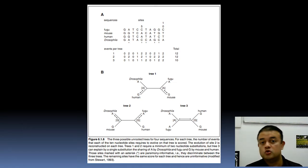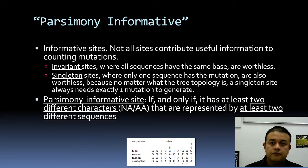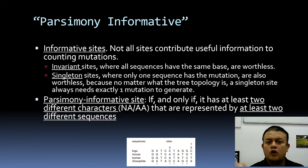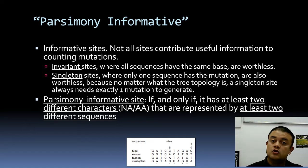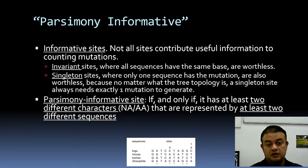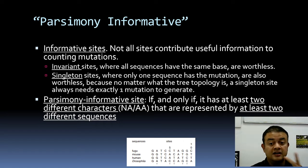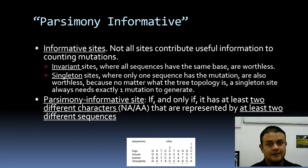Sometimes you generate millions of trees and choose the best one. Not all sites contribute useful information for counting mutations to construct the maximum parsimony tree. Invariant sites — where every sequence has the same base — are worthless. Singleton sites — where only one sequence differs — are also excluded. A parsimony informative site is one where at least two different characters are each represented by at least two different sequences. That is the definition of parsimony informative sites.